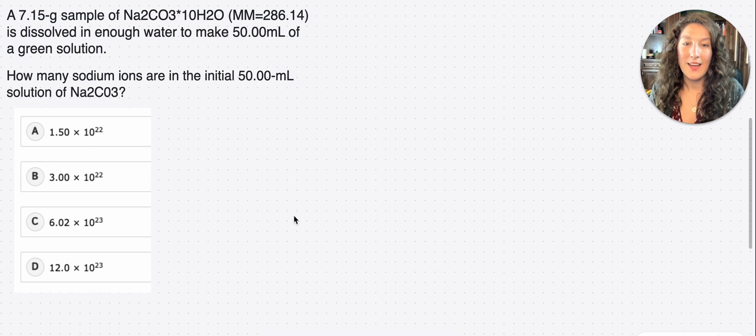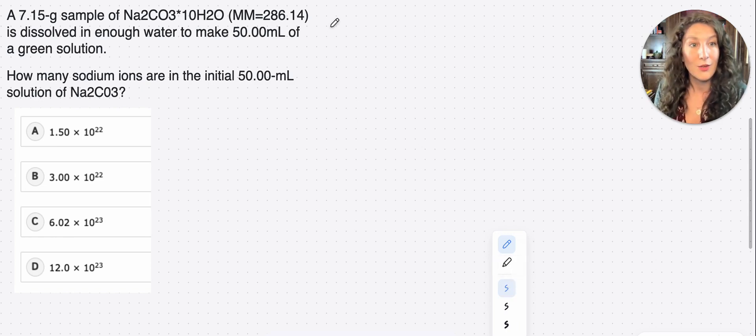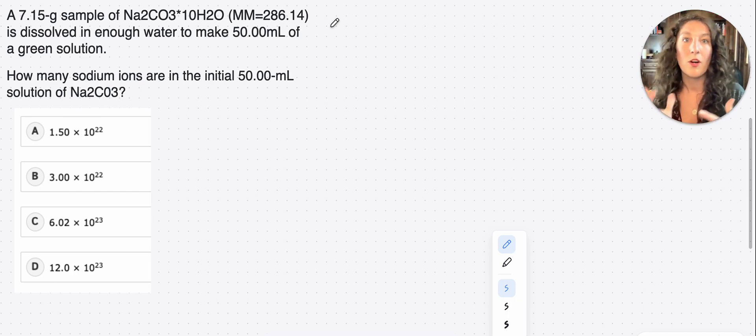Okay, so whenever I approach any of these types of questions where I know I'm going to need to do calculations, my first step is always to write out all the numbers that they give me. I know that seems a little redundant, but what it will allow you to do is check your units, check your numbers, see if there's anything missing that you'll need to either look in the passage for or know from your knowledge. Basically just get organized before actually getting into the calculation part.